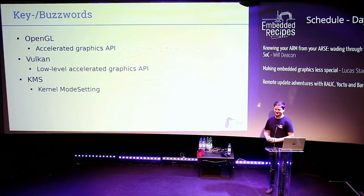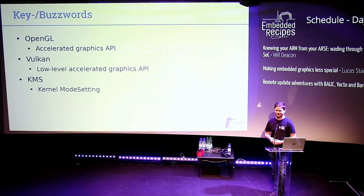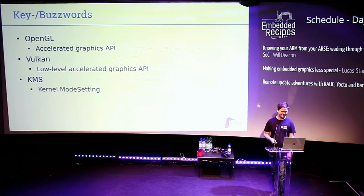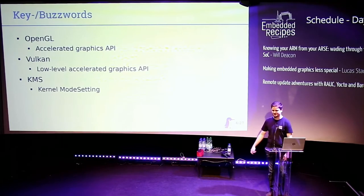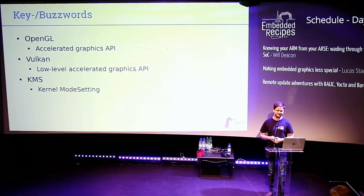OpenGL is the standard graphics API on Linux and other systems. Vulkan is getting all the attention now as a lower-level graphics API where the promise is that things get magically faster — that's not really true. You're just shifting the responsibility for getting things faster to another party. Kernel mode setting is the standard interface for display drivers.